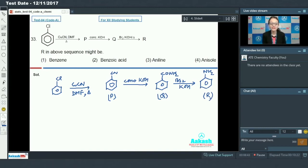This is compound R. Now we have asked R in above sequence might be. We have given first option is benzene, benzoic acid, aniline and anisole. As you can see that our compound R is aniline. So answer for this question is option number three.